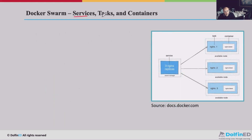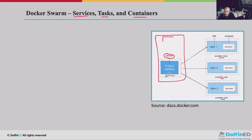In Docker Swarm, the concepts of services, tasks, and containers are new. For example, if I have three Nginx replicas and I need to create a service on worker nodes with three available nodes, I create a service inside the manager with three Nginx replicas. I want to create three tasks — each task will have an Nginx container — and I put all the specification, including which version of the container, inside the task definition. Then the service executes the tasks on the different available worker nodes.